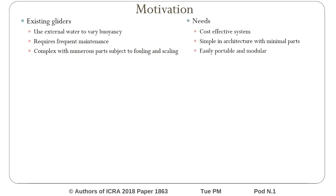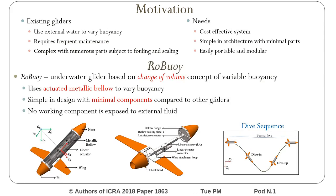It is also desirable that the overall system is easily portable and modular in design. Analyzing these requirements, we propose a novel underwater glider called Roboy, and it is based on the change of volume concept of variable buoyancy. It uses an actuated metallic bellow to vary the buoyancy.